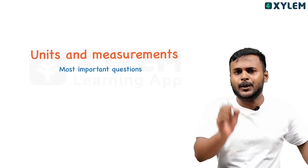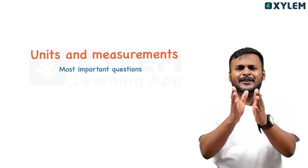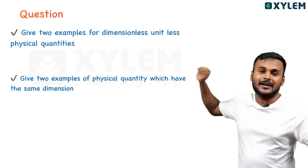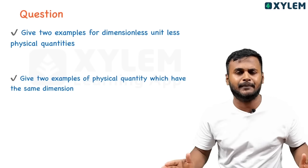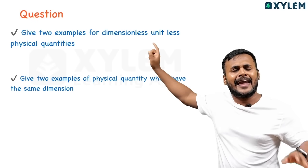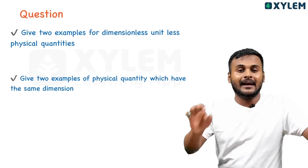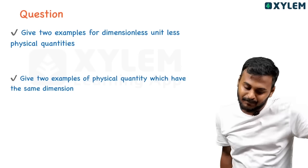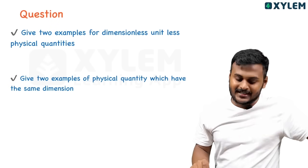We are going to continue to discuss the two parts. First is sort of a question: give two examples of dimensionless, unitless physical quantities.